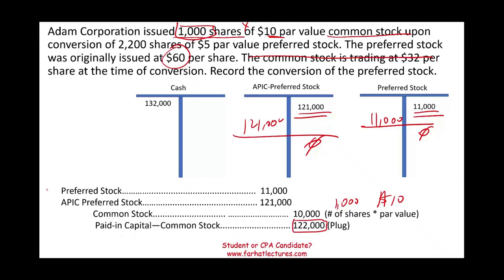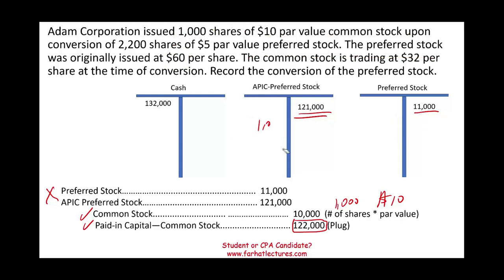All we did is take out the preferred and issue common stock — there is no gain and no loss. You could compute whether there is a gain or a loss, but you cannot book a gain or a loss by exchanging your own common stock. Just like when you buy or sell your own stock as treasury stock, you cannot book a gain or a loss. The general rule is: when you deal with your own equity — buying and selling your equity — you cannot book a gain or a loss. It cannot be seen as a transaction that goes on the income statement.